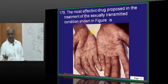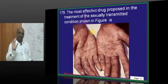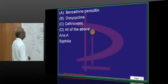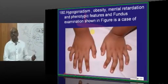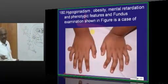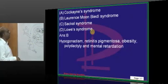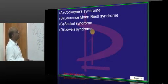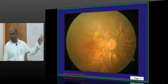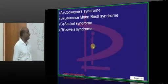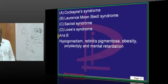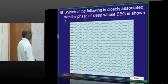Secondary syphilis typically presents with copper-colored patches on the palms — you use benzathine penicillin. Then hypogonadism, mental retardation, polydactyly, and fundus examination showing the bone spicule appearance — bony spicule appearance is a feature of retinitis pigmentosa. All this combination is typically a feature of Laurence-Moon-Bardet-Biedl syndrome, many times asked in the NEET-PG exam. You should answer it correctly.